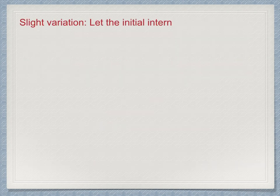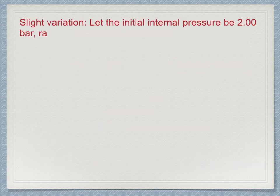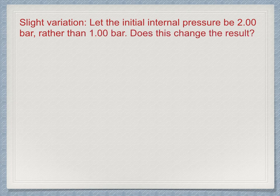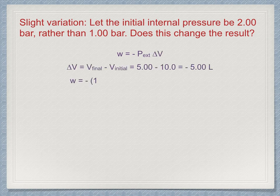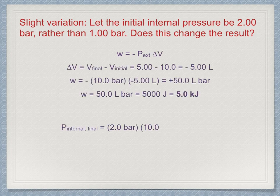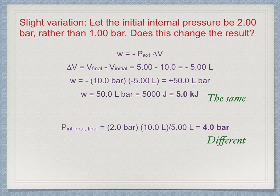Consider a slight variation on the problem: let the initial internal pressure be 2 bar instead of 1 bar. You could do this by filling the piston with twice as much gas as at the beginning. The work calculation is based only on external pressure, which has not changed. The volume change is the same, so W equals 5 kilojoules is still the work done on the system. The difference, of course, is that the final internal pressure is now 4 bar.